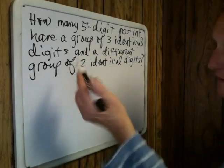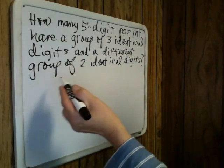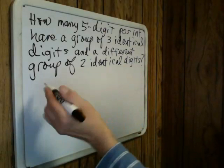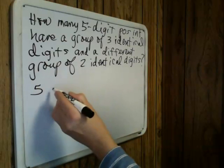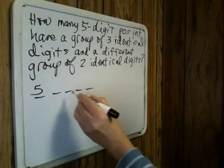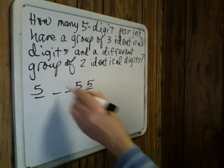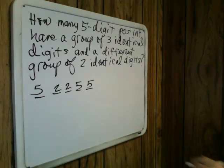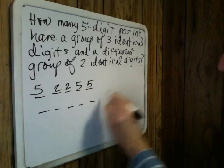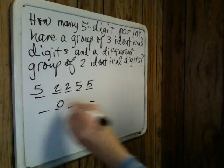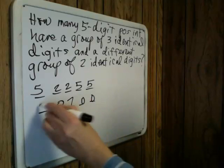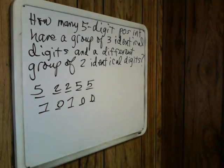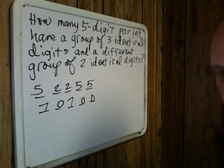Here are some examples of the kinds of numbers we want to count. We could have three fives in any order — let's put the fives in certain positions, and then the other two digits would also be identical but different. Again, a group of three identical digits, such as zero-zero-zero, and then a group of two identical digits. As you see, the identical digits do not have to be consecutive or adjacent to each other.